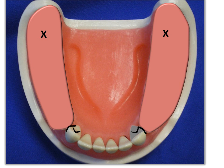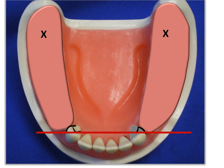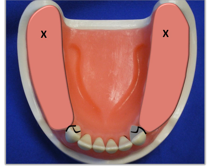Next we identify the fulcrum line, which is present in all tooth-tissue-borne partial dentures. The fulcrum line is an axis of rotation about which the partial denture will rotate in the sagittal plane — rocking anteriorly and posteriorly. This rocking is inevitable due to tissue consistency but can be greatly reduced with well-formed, well-adapted bases and an indirect retainer in the anterior area. We identify the fulcrum line in every partial denture that could potentially have one.